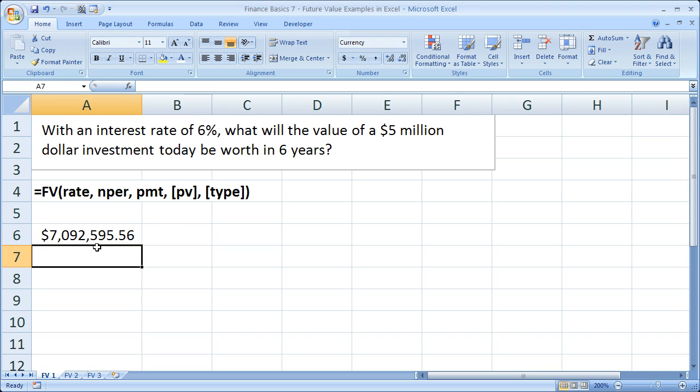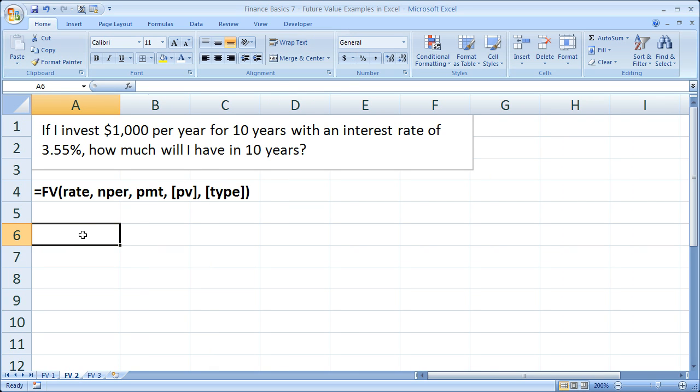So let's go ahead and move on to the second example right here, FV2. The second example is, if I invest $1,000 per year for 10 years with an interest rate of 3.55%, how much will I have in 10 years?